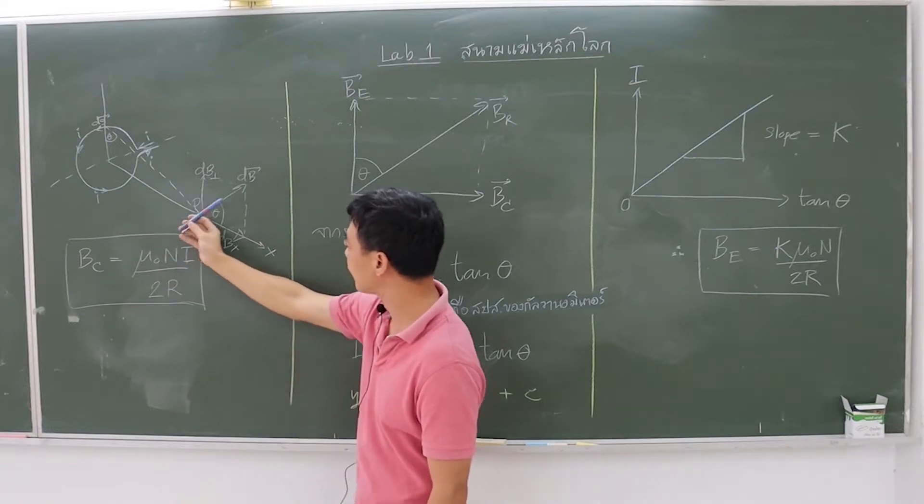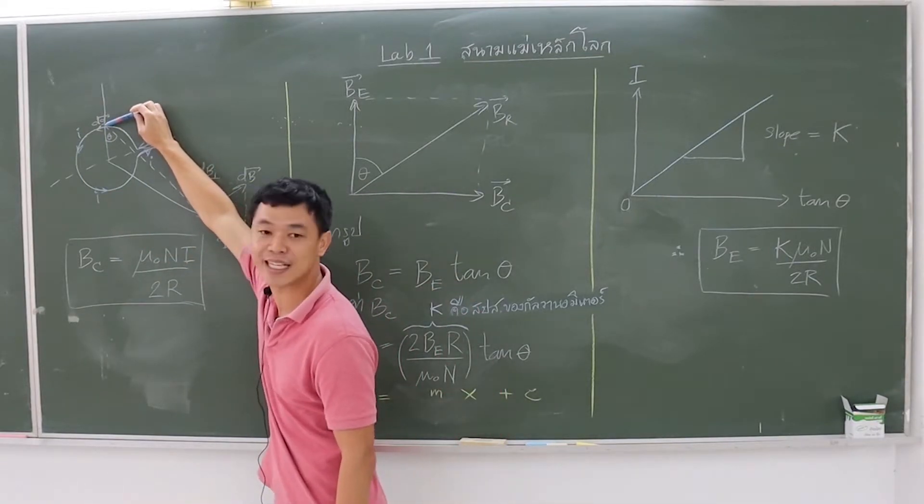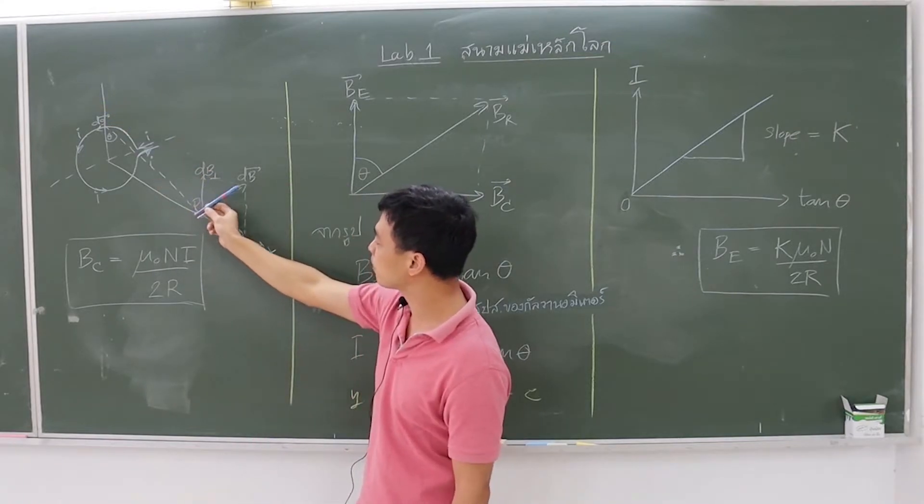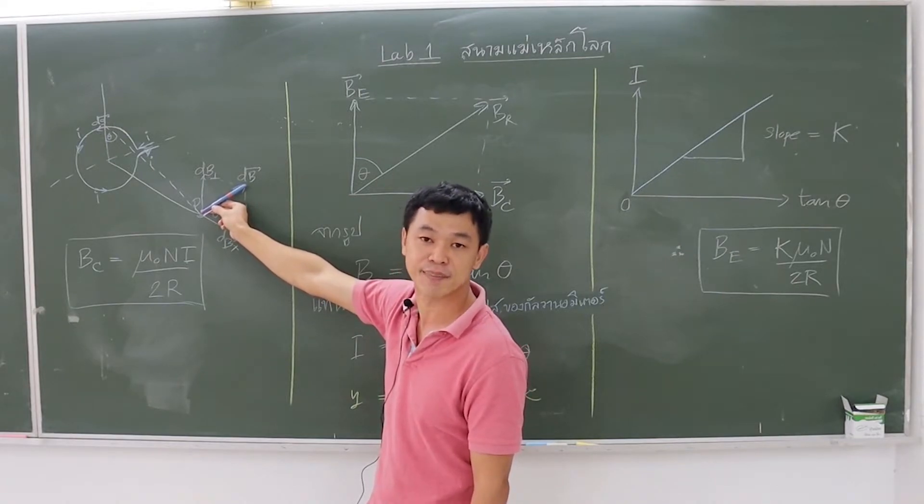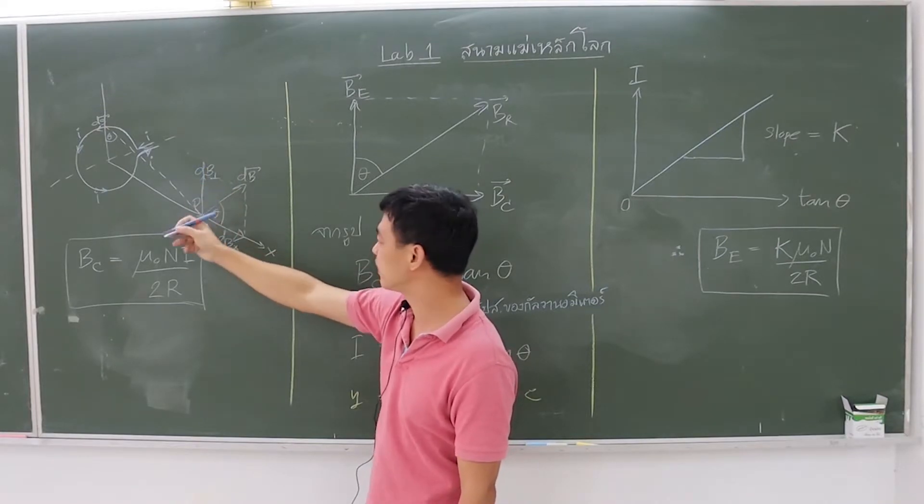As shown in the figure, the magnetic field DB arises from the part of the wire DS with the current flowing. A magnetic field is formed and can be separated as a vector component of the field, which can write the relationship as in the picture.